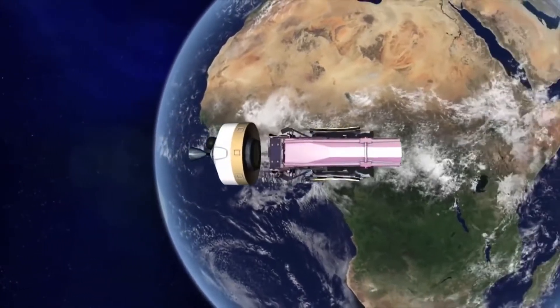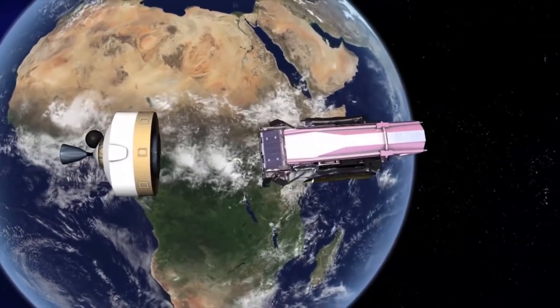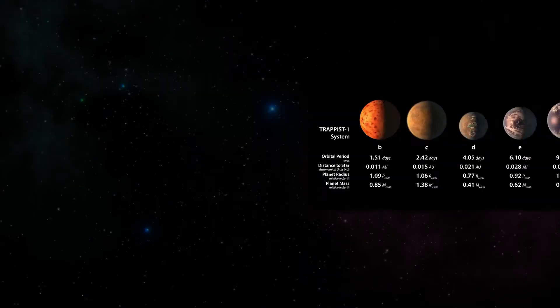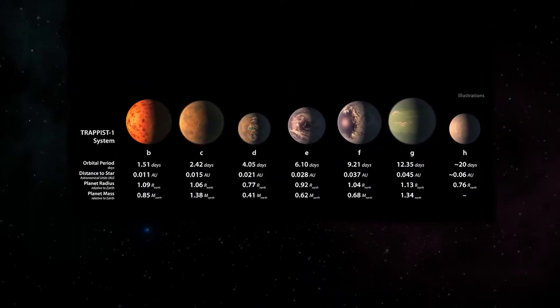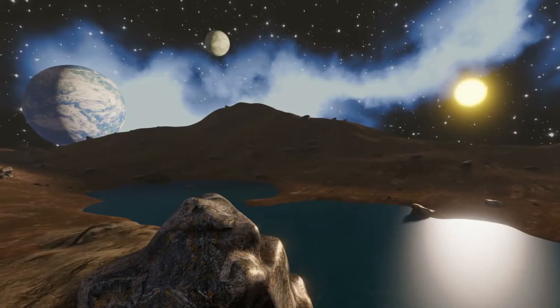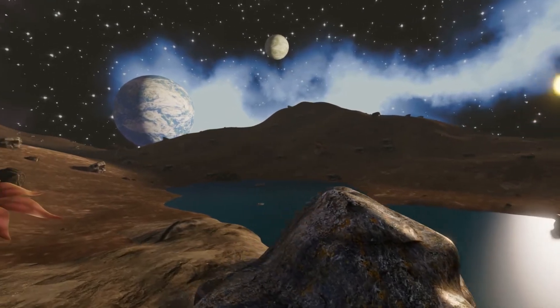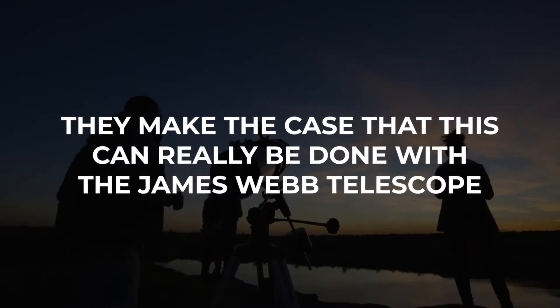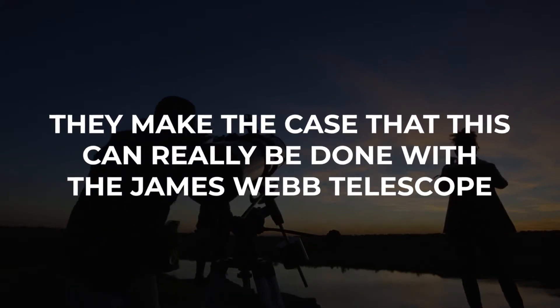Researchers predict that the James Webb Telescope could measure the amounts of methane and carbon dioxide in the atmosphere of the fourth planet, TRAPPIST-1e, from the dips in light at wavelengths affected by these gases. It would be a tough measurement of an unimaginably tiny signal. Astronomers are excited by the prediction, saying they make the case that this can really be done with the James Webb Telescope.